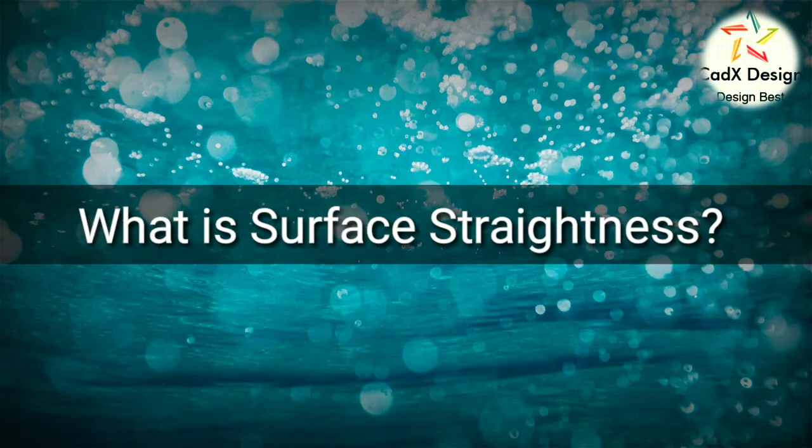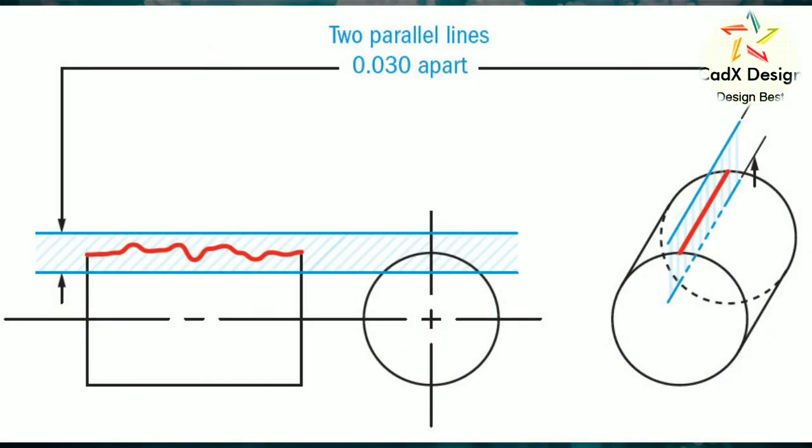Surface straightness: The standard form of straightness is a two-dimensional tolerance that is used to ensure that a part is uniform across a surface or feature. Straightness can apply to either a flat feature such as the surface of a block, or it can apply to the surface of a cylinder along the axial direction. It is defined as the variance of the surface within a specified line on that surface.